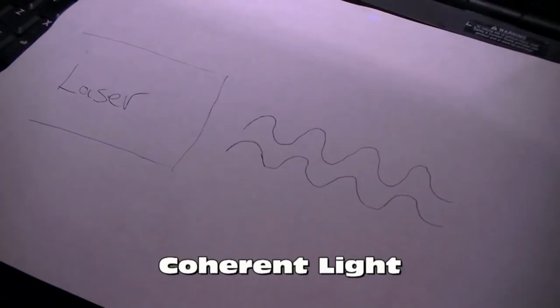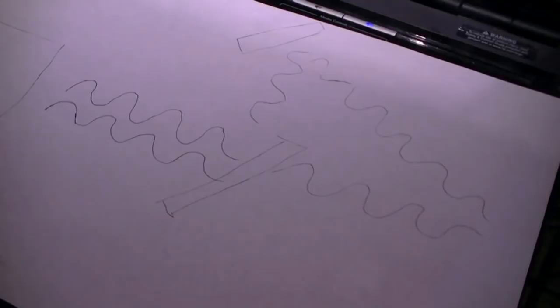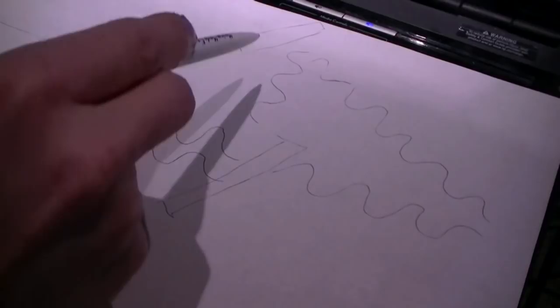In the first experiment, I'll be taking a green laser pointer, splitting the beam and delaying one path, and then recombining to show fringe patterns of interference.